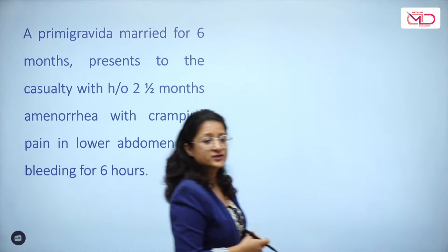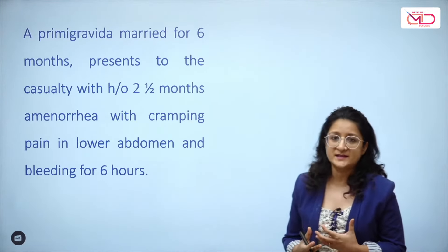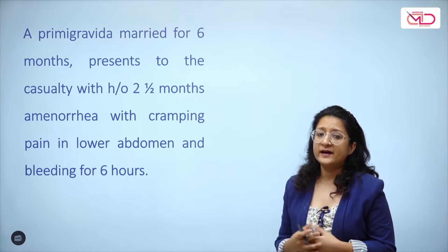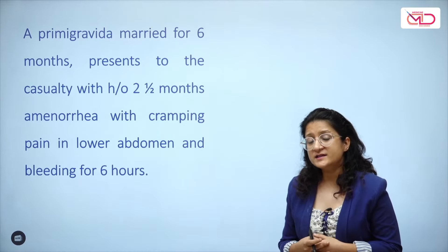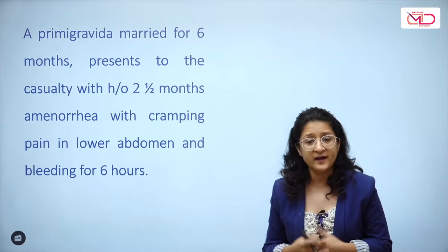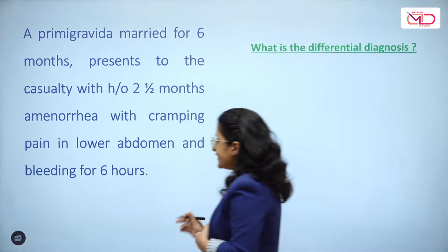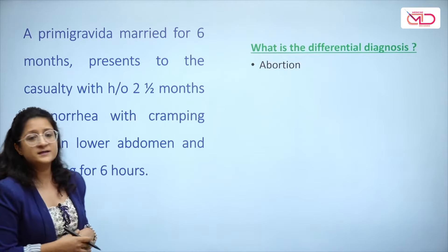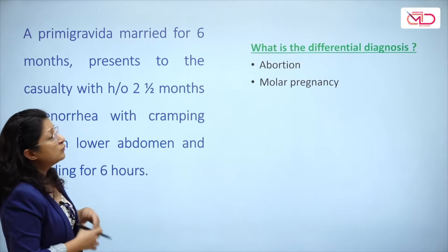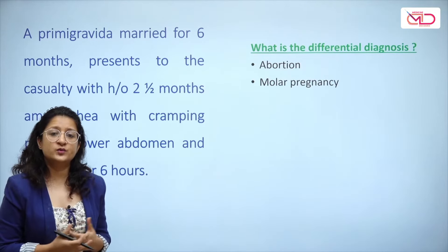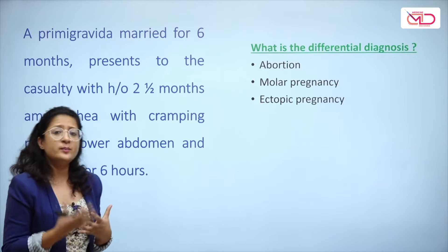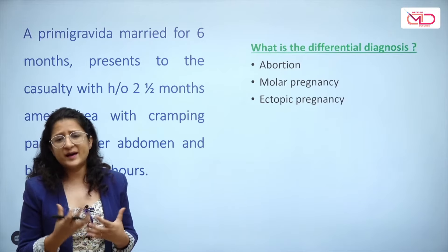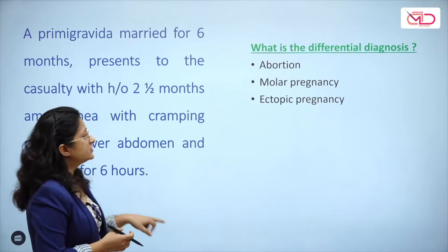Consider this clinical situation: a primigravida who's been married for six months comes with a complaint of pain followed by bleeding per vagina for six hours, with two and a half months of amenorrhea. What differential diagnoses come to mind? At the top: miscarriage or abortion, molar pregnancy presenting with first trimester bleeding, and ectopic pregnancy — which usually presents with pain first, followed by some vaginal bleeding.